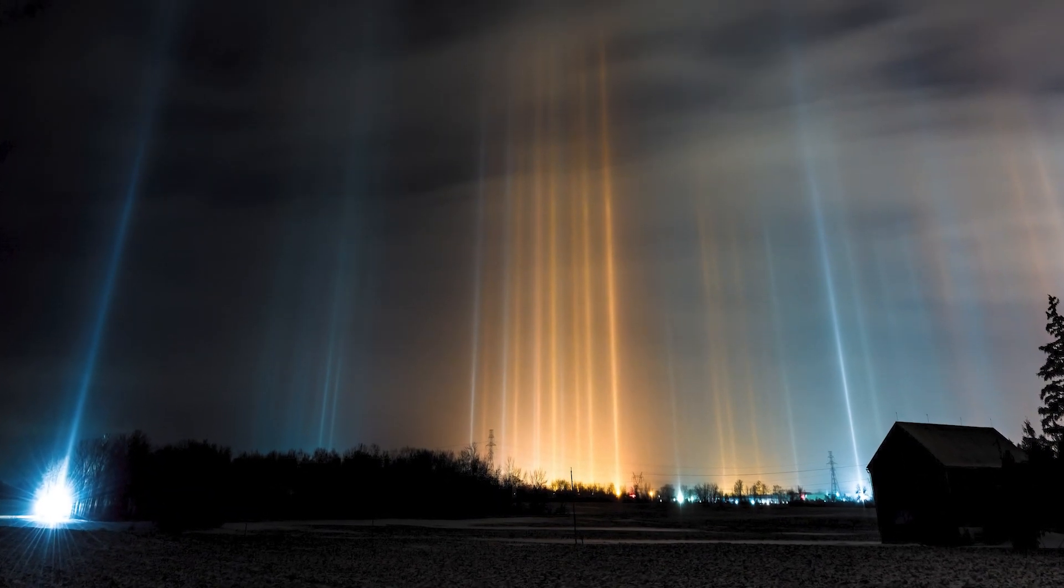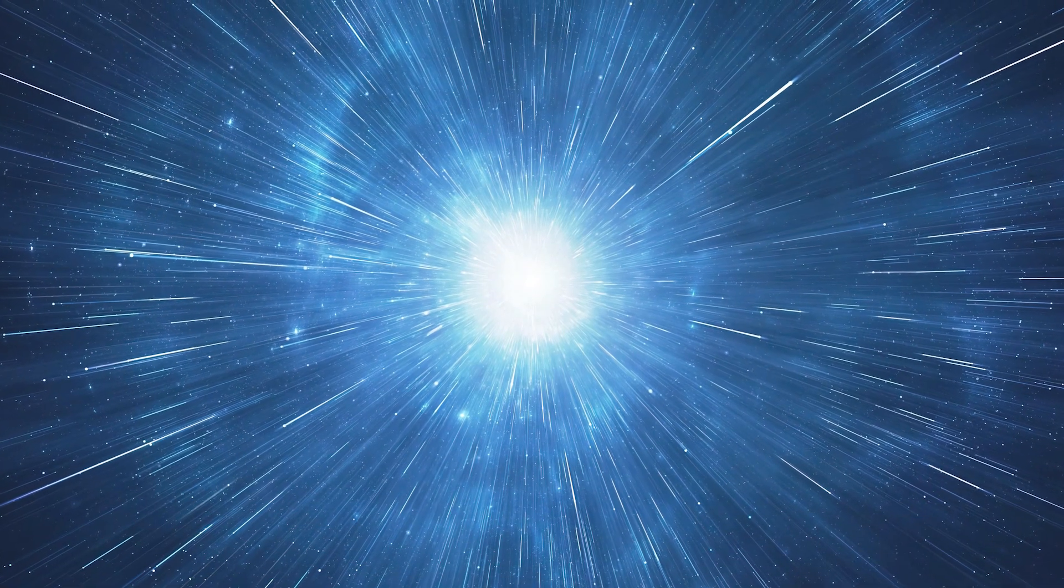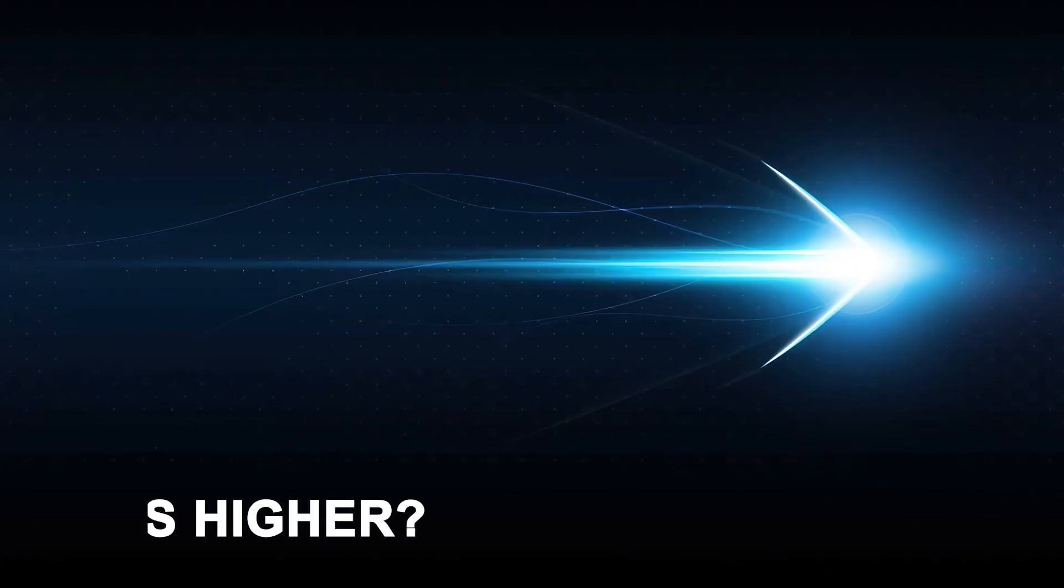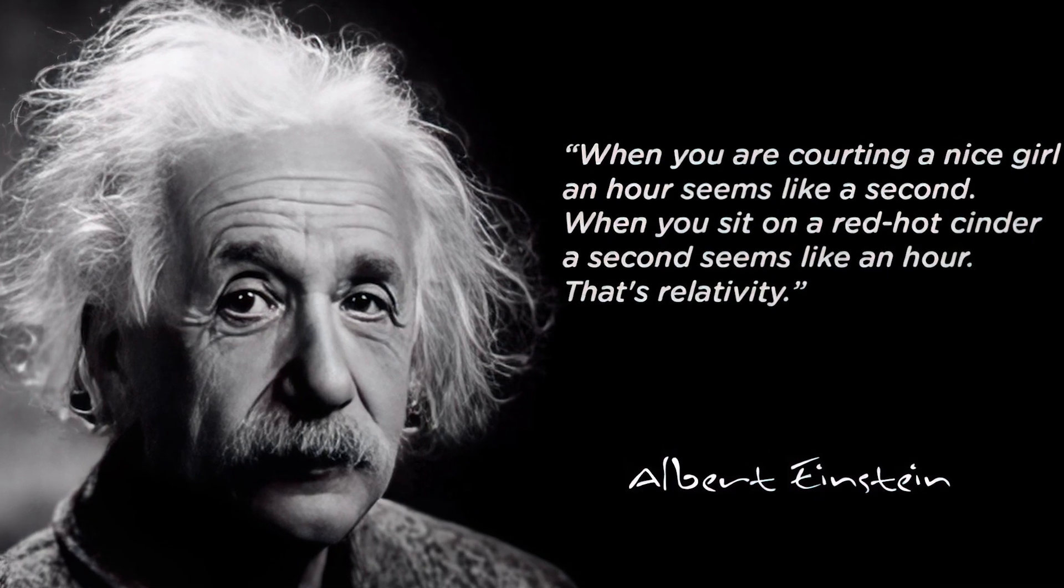Considering the formula stated earlier, the speed of light will be equal to distance traveled by time, and if the speed of light is constant, the distance traveled by time changes. If the speed gets higher, time gets slower. It indicates that time itself will change. It will always be relative.